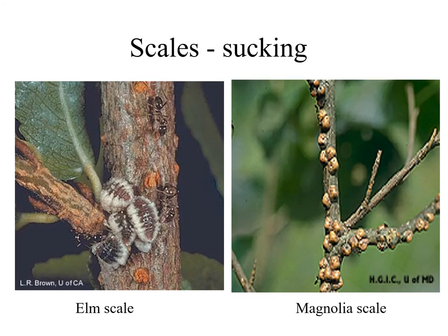Scales affect the plant with sucking mouth parts. Soft scales such as elm scale and magnolia scale produce honeydew on which sooty mold fungi grow. You may see sooty mold on leaves below the infested branches.